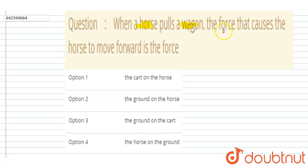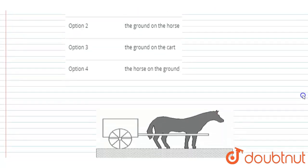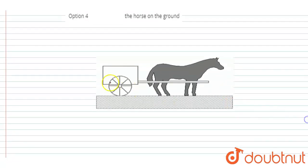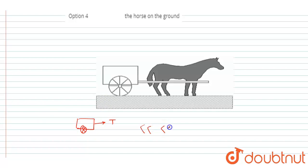Hello everyone. When a horse pulls a wagon, the force that causes the horse to move in the forward direction is what? Let us see the diagram first. If you see the wagon with forces, the wagon is being acted on by a forward direction force T. This is the wagon, acted on by force T in the forward direction.